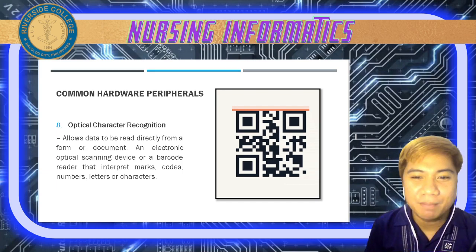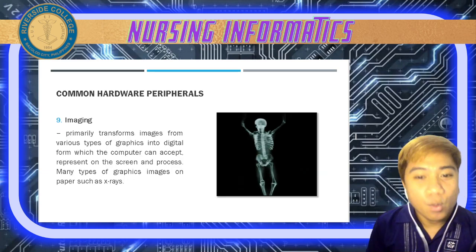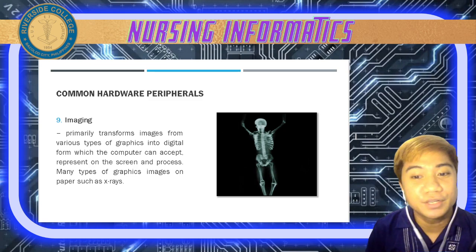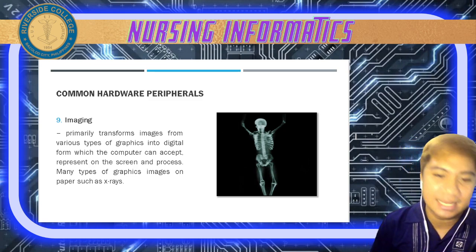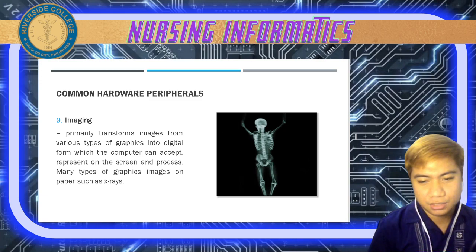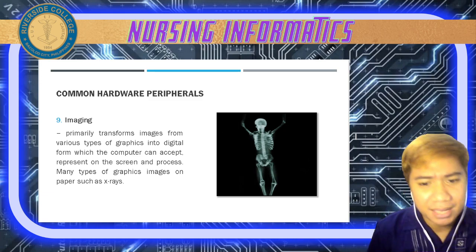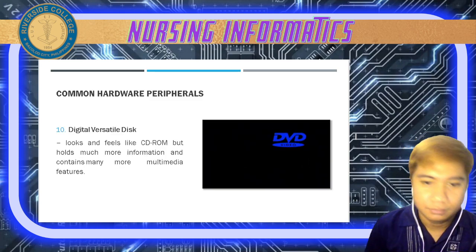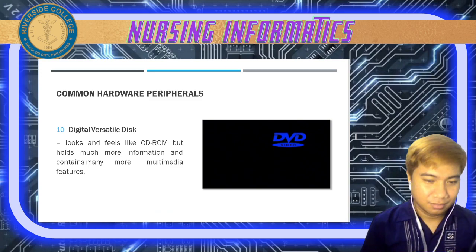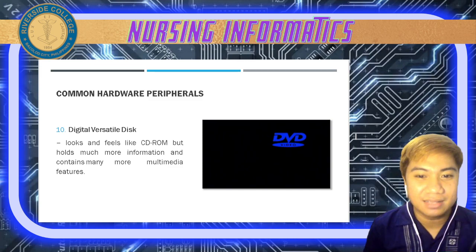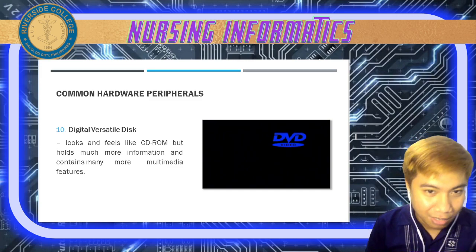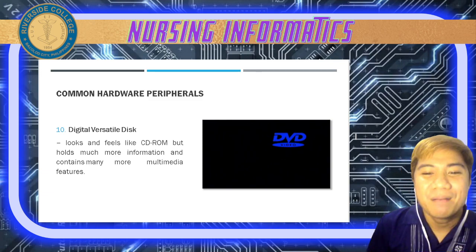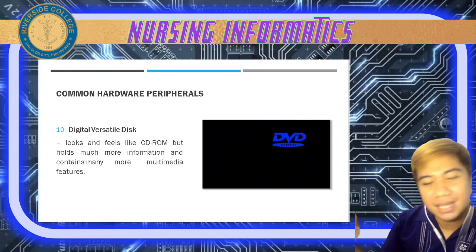We also have imaging, which primarily transforms images from various types of graphics into digital form that the computer can accept, display on the screen, and process — including graphical images on paper such as X-rays. We also have DVD or Digital Versatile Disk, which looks and feels like a CD-ROM but holds much more information and contains many more multimedia features.